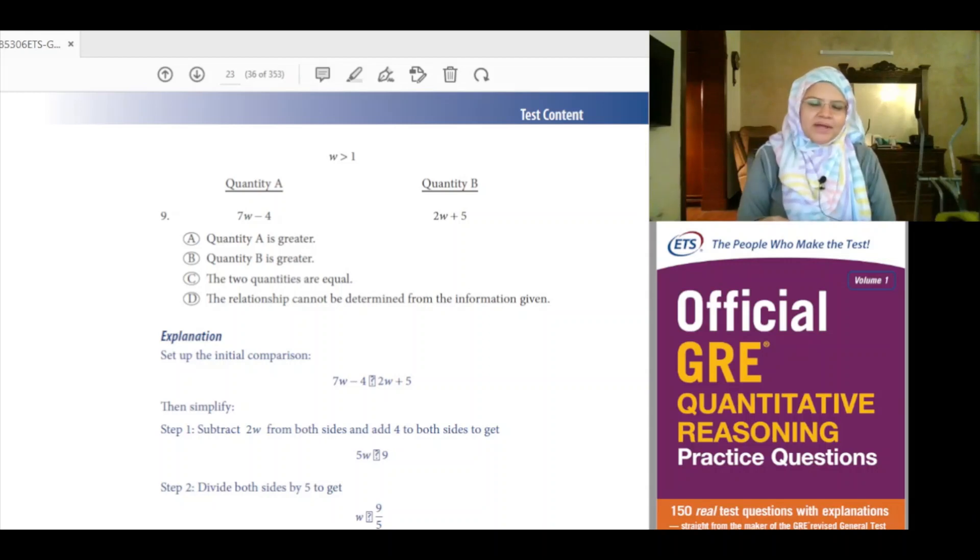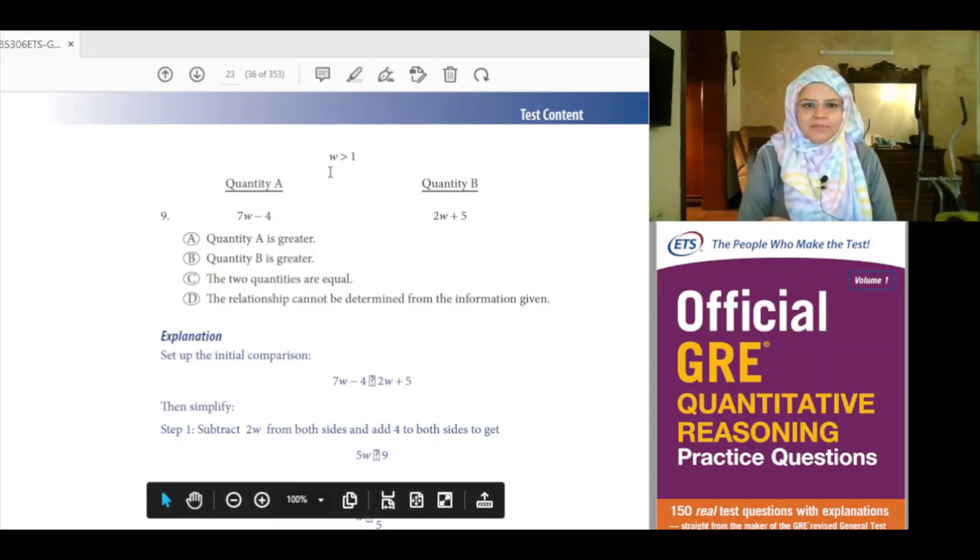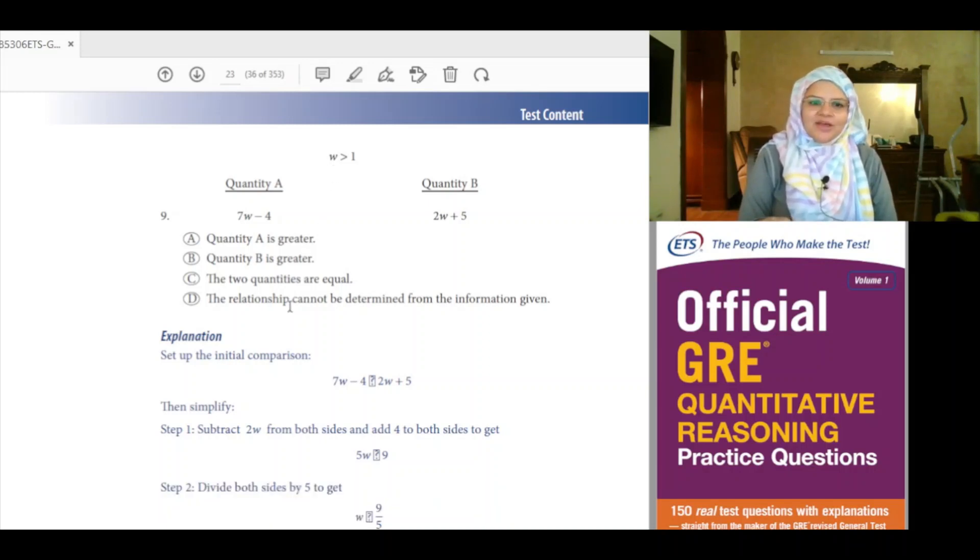W is greater than 1. Quantity A: 7W minus 4. Quantity B: 2W plus 5. A: quantity A is greater. B: quantity B is greater. C: the two quantities are equal. D: the relationship cannot be determined from the information given.